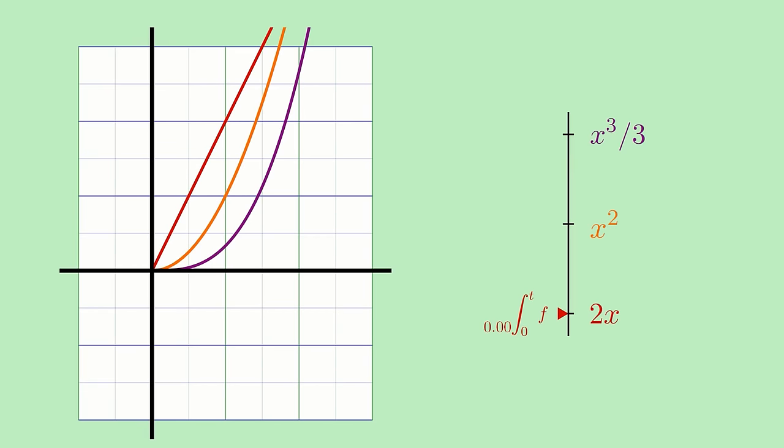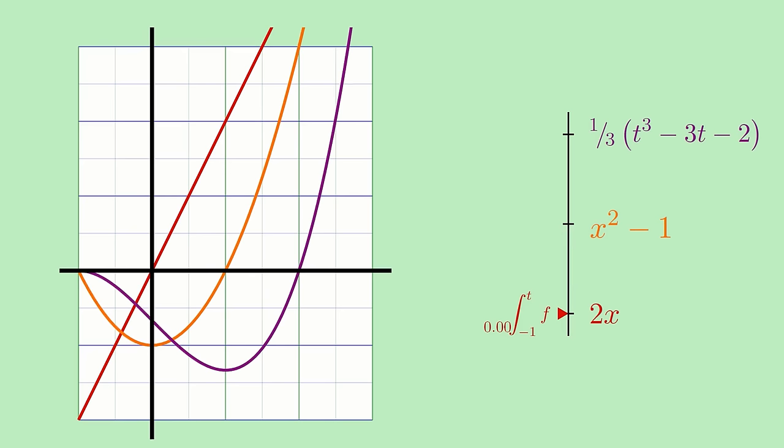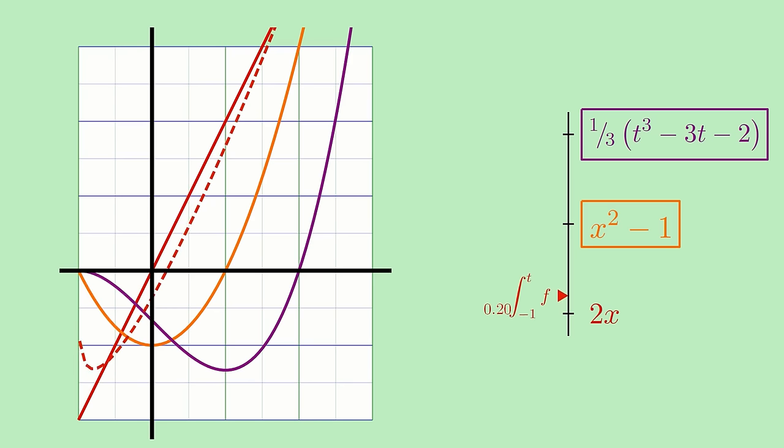Returning to the original line 2x, here's what happens if I change the integration lower limit to a equals negative 1. You'll notice the integrals of 2x get a little more complicated because the altered lower limit changes the values of the integration constants, but our fractional integral is still able to interpolate between them all the same.